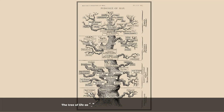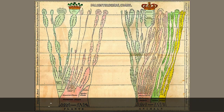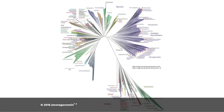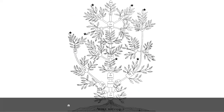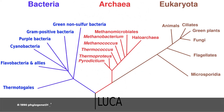Tree diagrams originated in the medieval era to represent genealogical relationships. Phylogenetic tree diagrams in the evolutionary sense date back to the mid-19th century. The term phylogeny, for the evolutionary relationships of species through time, was coined by Ernst Haeckel, who went further than Darwin in proposing phylogenetic histories of life. In contemporary usage, tree of life refers to the compilation of comprehensive phylogenetic databases rooted at the last universal common ancestor of life on Earth.